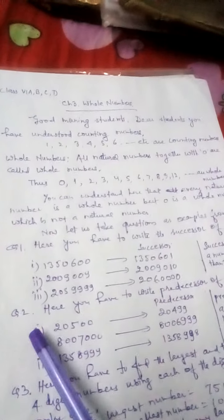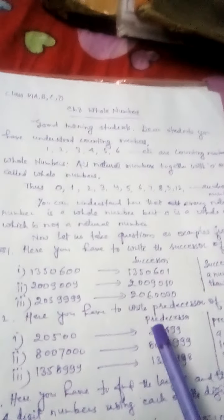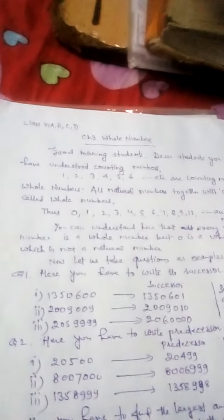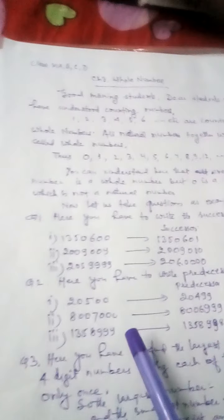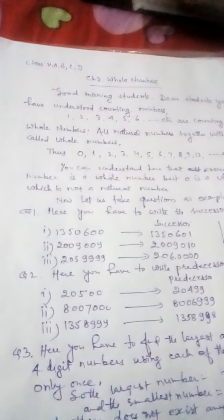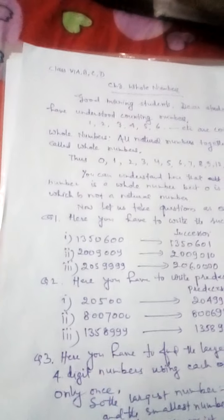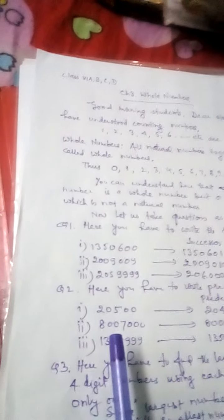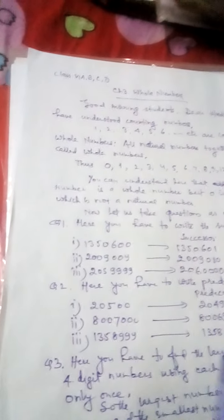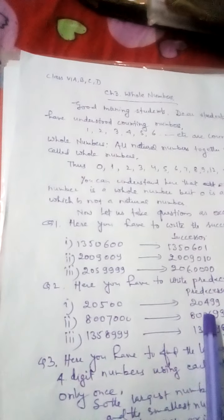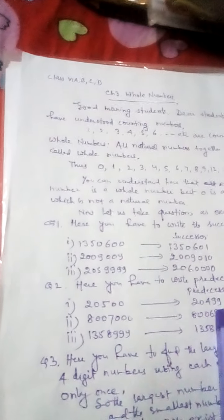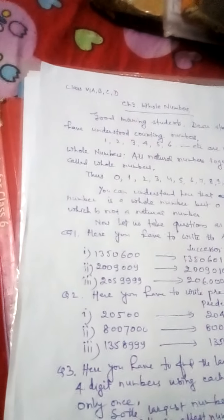In the same way, you go for question number 2. Here you have to write predecessor of the given number. So predecessor means a number which is one less than the given number. Here 20,500, so its predecessor will be 20,499.